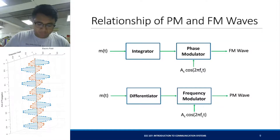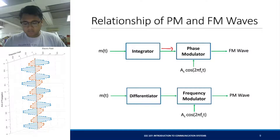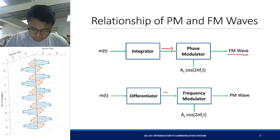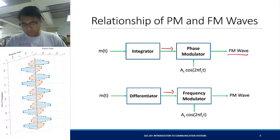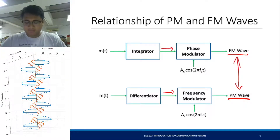If you put m(t) into an integrator and then into a phase modulator, you get an FM wave. If you put m(t) into a differentiator and then into a frequency modulator, you get a PM wave. So there is a clear relationship between the two.